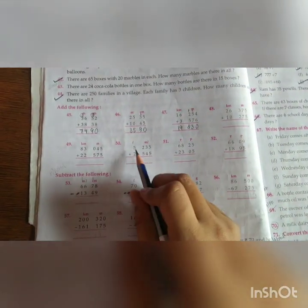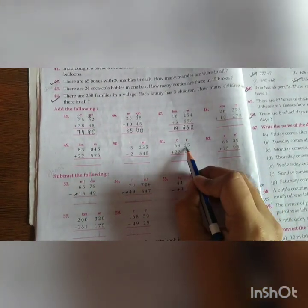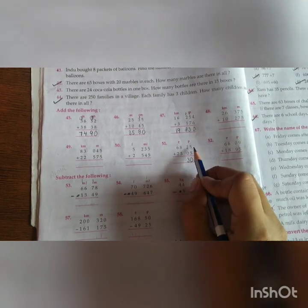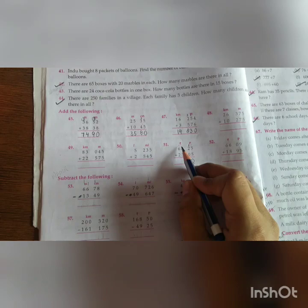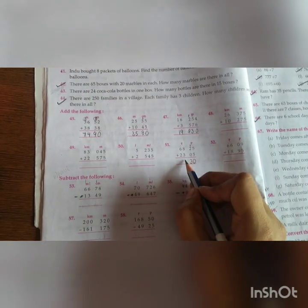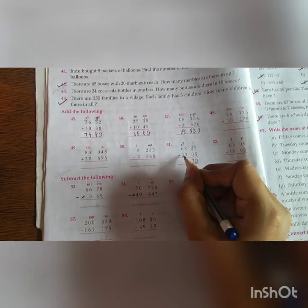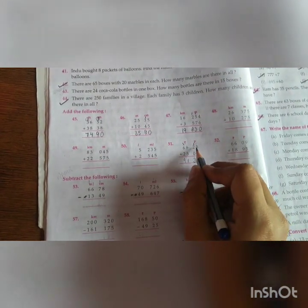Similarly, you will add liters and milliliters and rupees and paise also. Twenty-five paise plus five paise. So it is thirty. Five plus five, ten. One carry. Two plus one, three. Now add the rupees. Eight plus three, eleven. One carry. Six plus two, eight. Eight or one, nine. So ninety-one rupees, thirty paise.